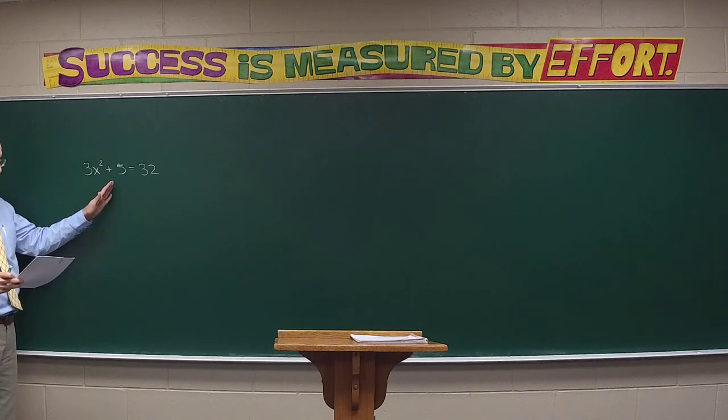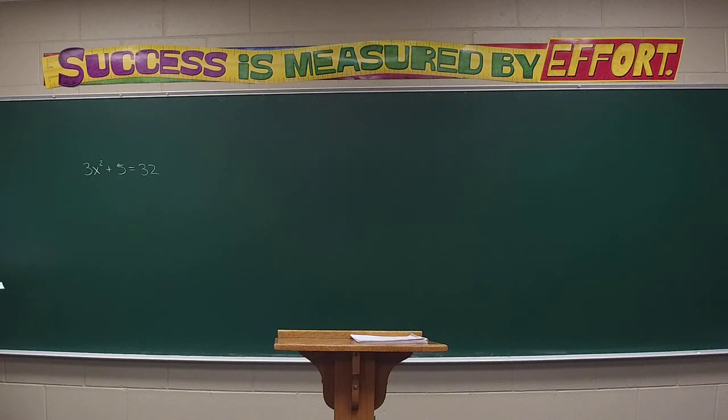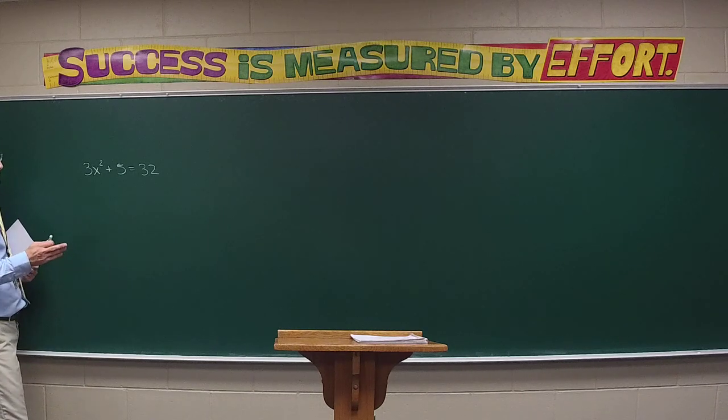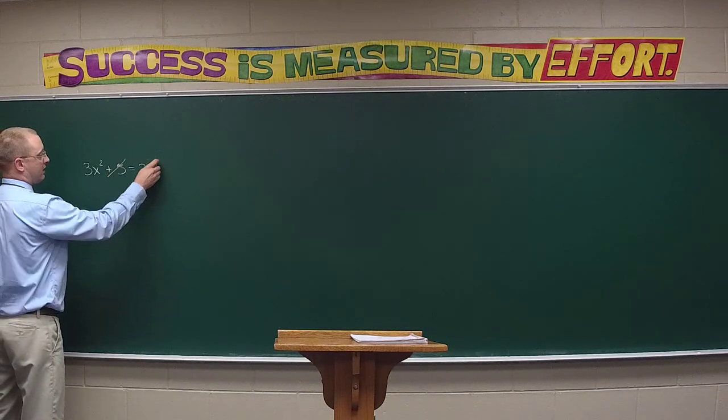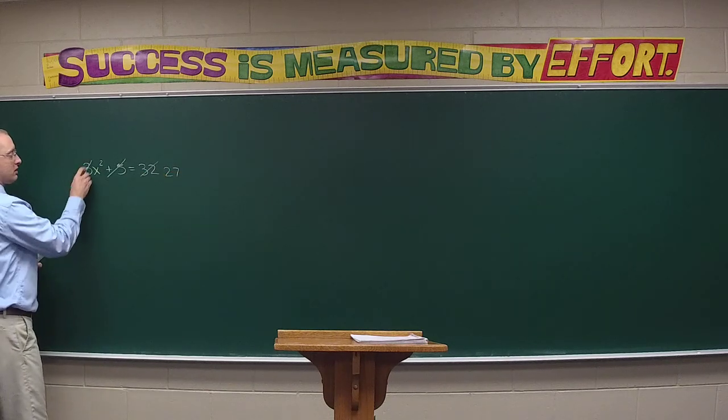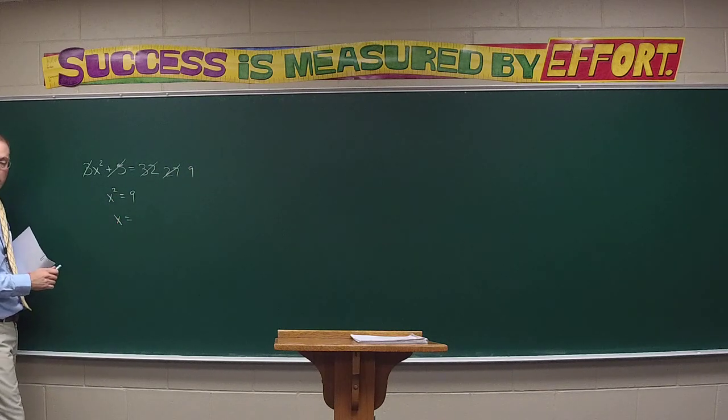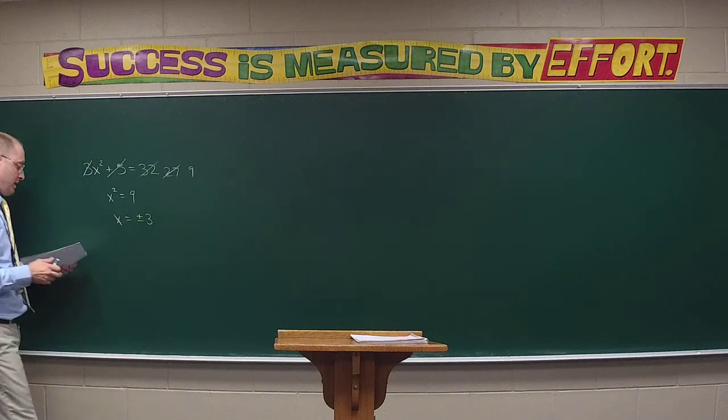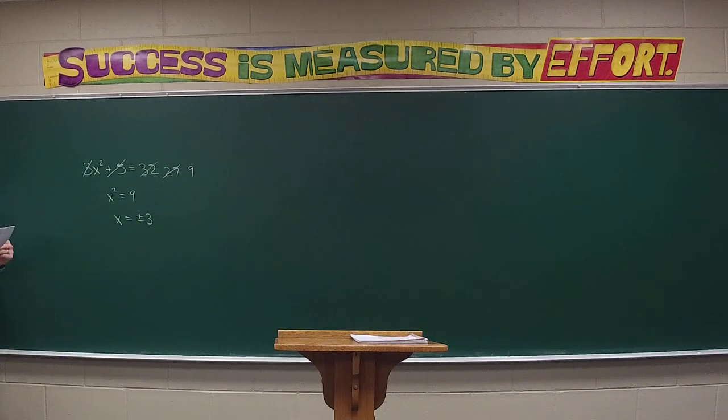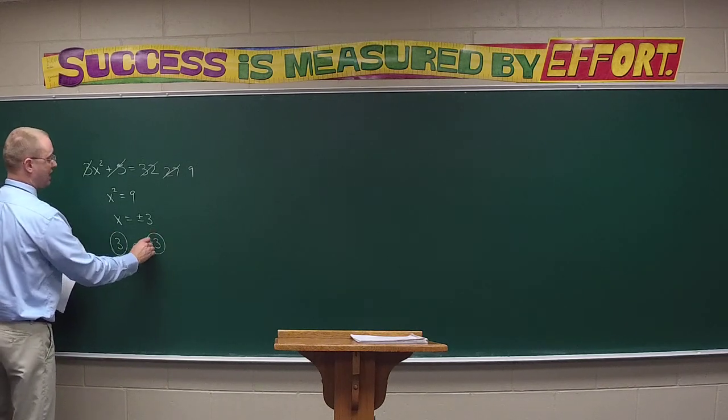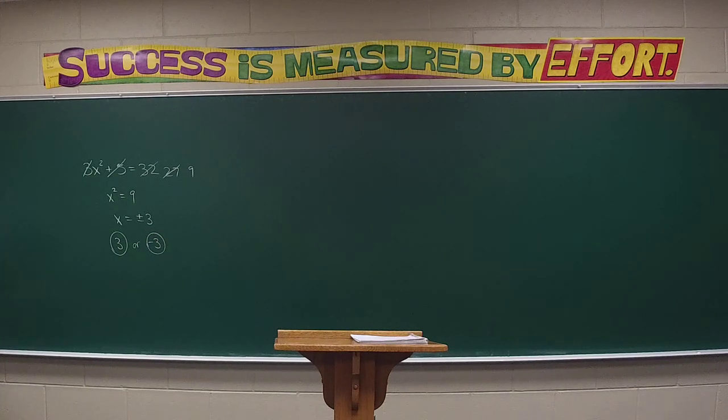What kind of quadratic do we have here? We need to get x squared by itself, then take the square root. So x squared equals nine, which means x equals positive or negative three. When it says find the number, that means the number is either three or negative three, not both.